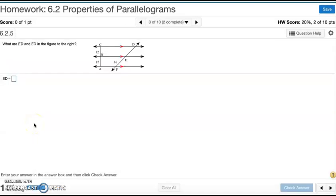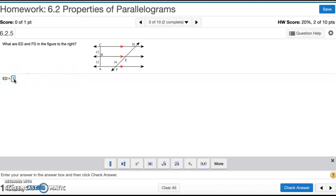Number 3. What are ED and FD in the figure to the right? Notice how AB and BC have the same measure. E and ED are also going to have the same measure. So ED is going to have a measure of 16.